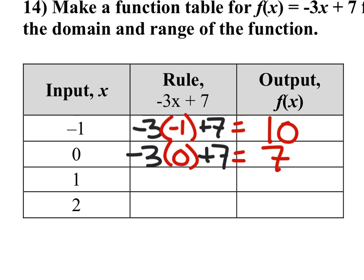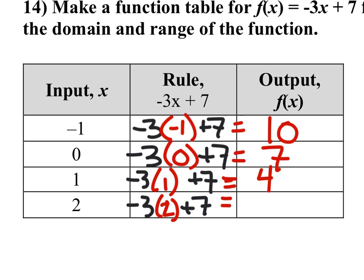So let's go ahead and do this, the input is 1 and 2 there. So negative 3 times 1 is negative 3, plus 7, well that'd be 4. On that last row, we've got negative 3 times 2, which is negative 6, plus 7, 1.